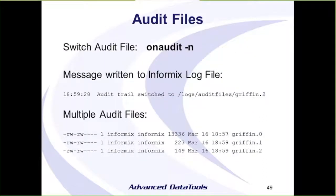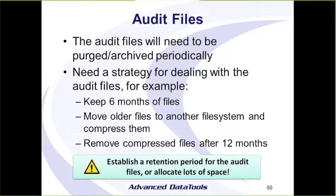Here's an example of using on-audit -N to switch to the next file. When switching, a message is written to the Informix log, and you can see the files with sequential numbers at the end. Now that you've got multiple audit files building up, you need to think about what your strategy is for dealing with them. Do you plan to keep auditing information indefinitely? Or after a certain time, decide to archive or remove those files? You need to think about how to manage those files, because they will fill up the file system.